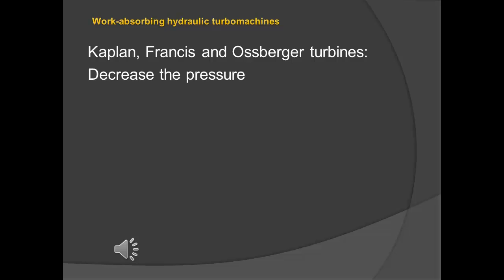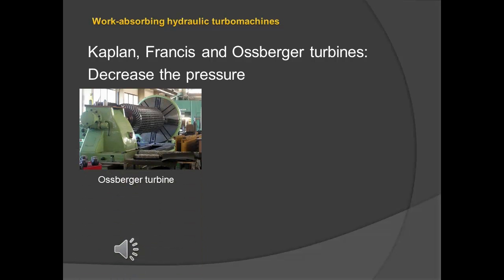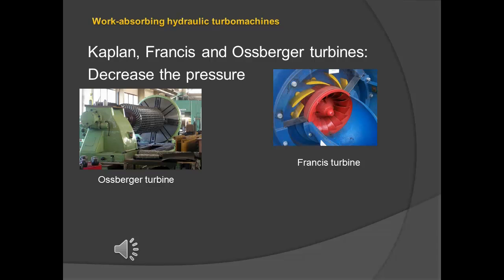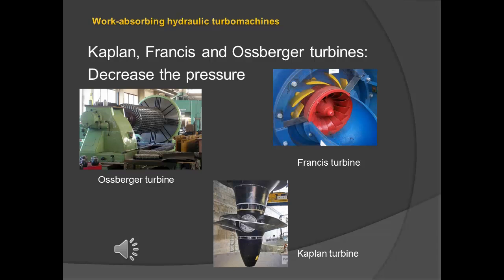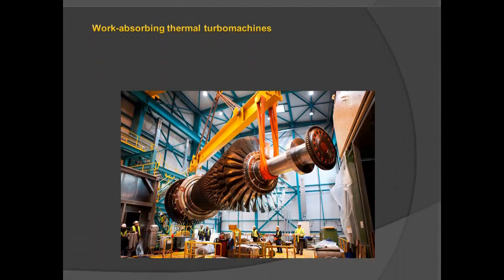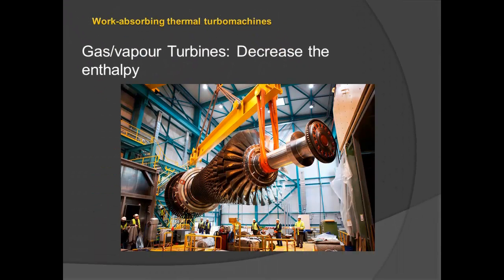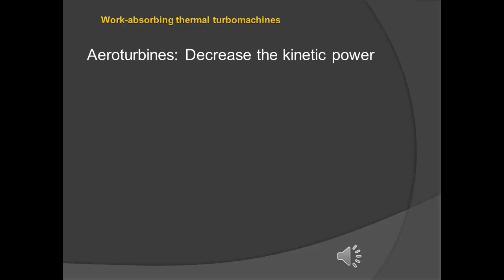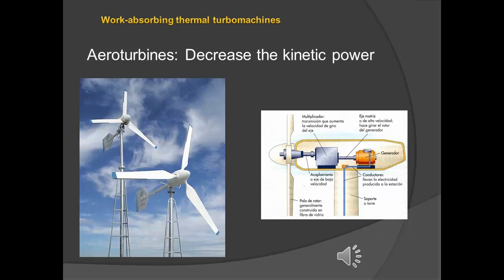This kind of turbines produce an expansion of the fluid and the molecules aren't closer than before and this is the reason for the pressure decreases. Aeroturbines use the speed of the air to produce energy. In this way, the kinetic power of the air decreases.